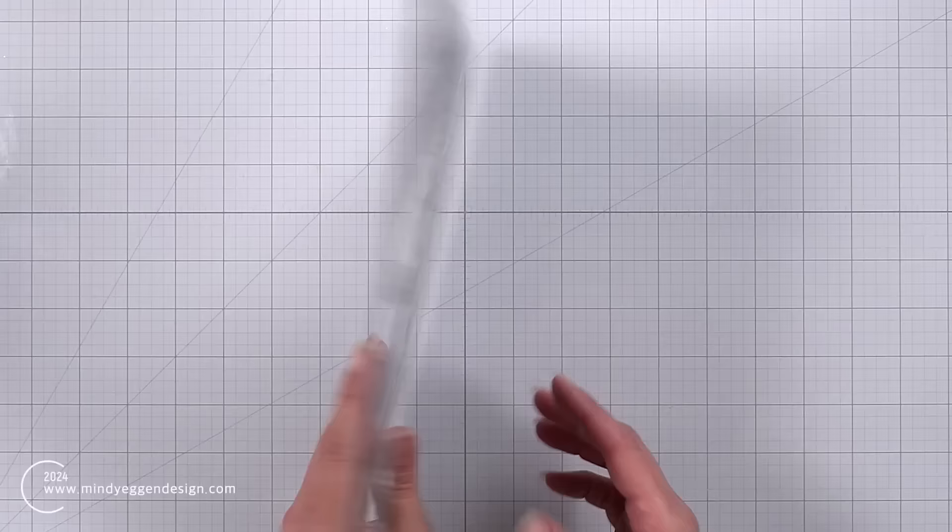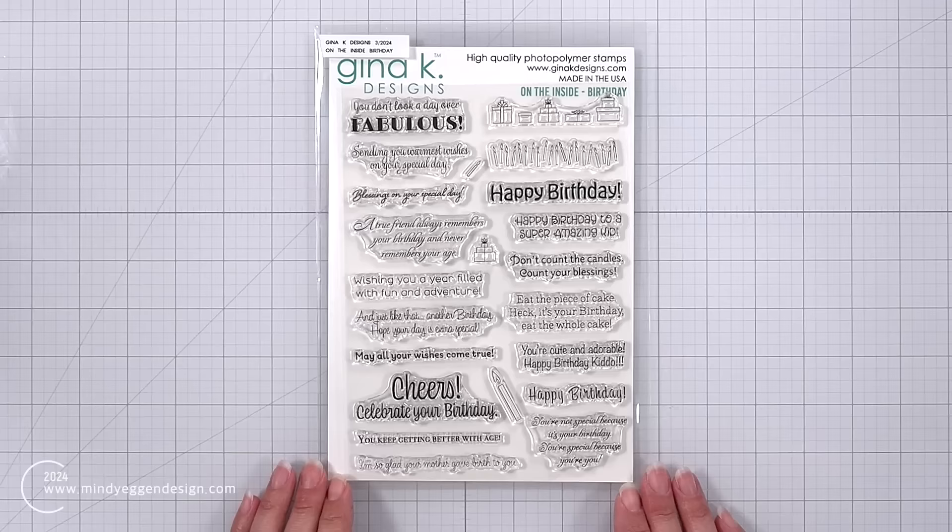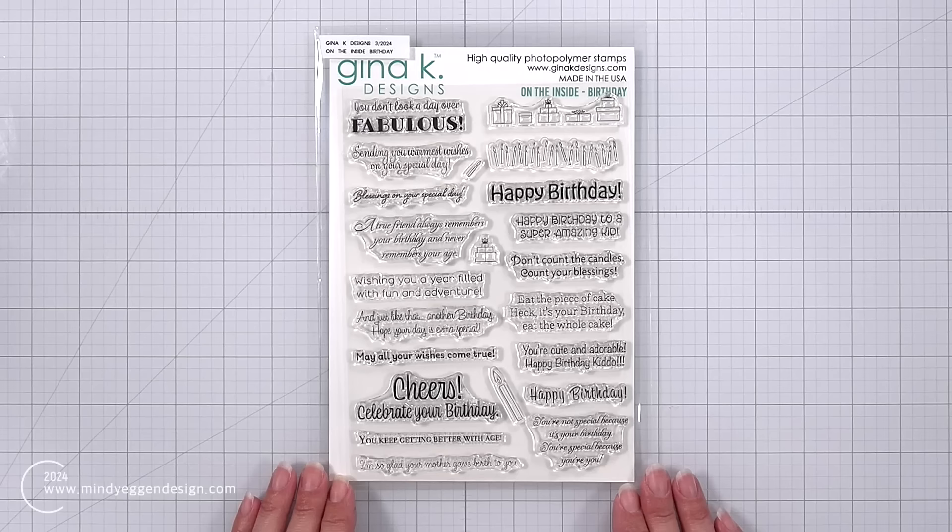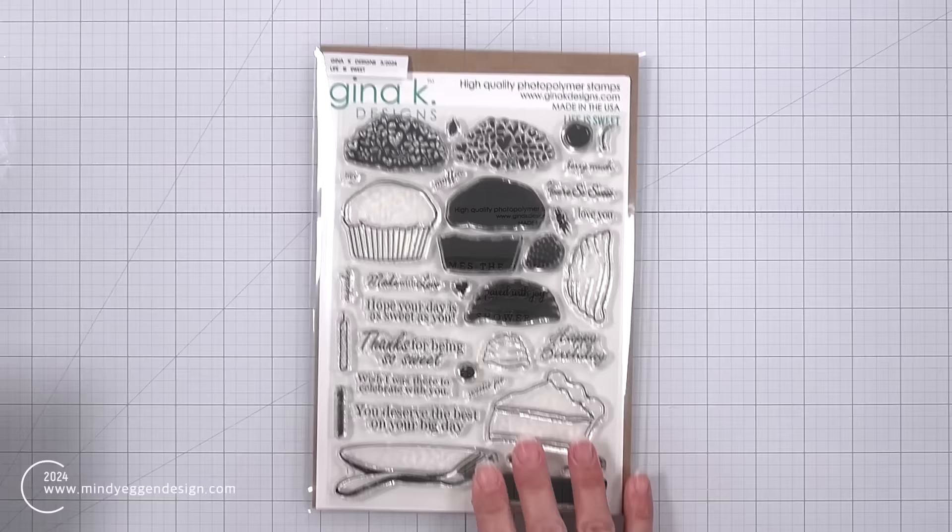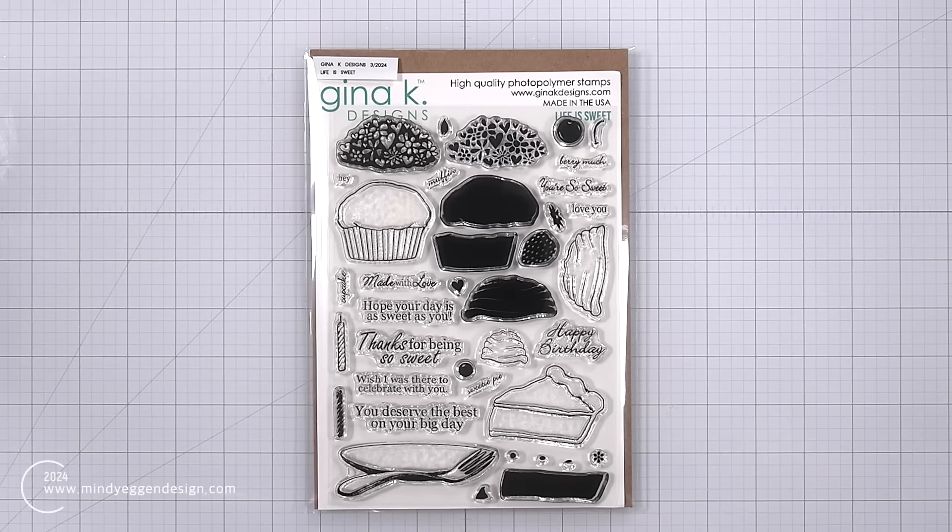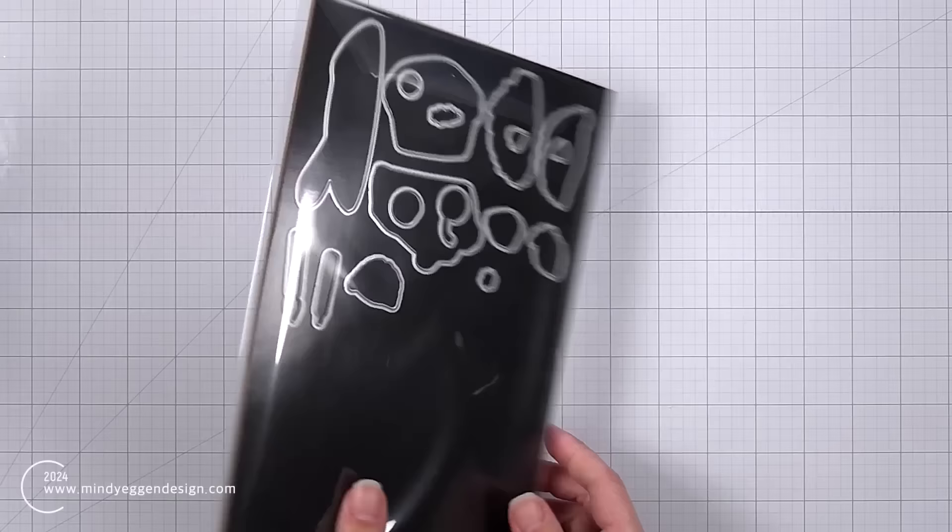Now as I'm showing the rest of these I do want to explain something. So normally you could purchase the dies separately or come back later and get dies, but what's going to happen now is that you can either buy the bundle so it would have the stamp and the die set or just the stamp set. There will not be individual dies being sold anymore to my understanding unless of course it is meant to be a standalone die set.